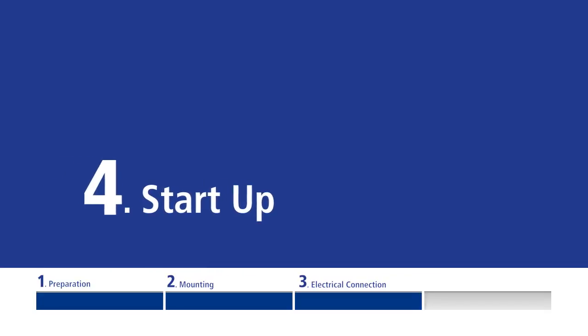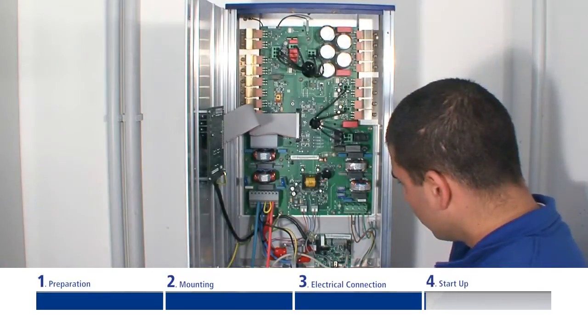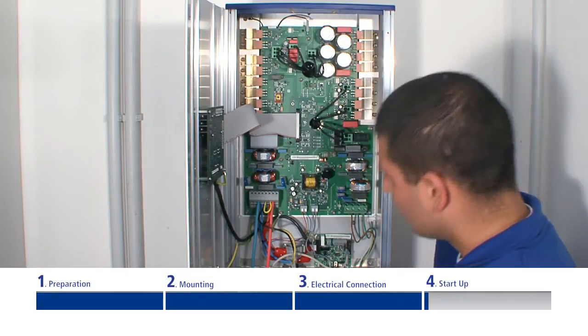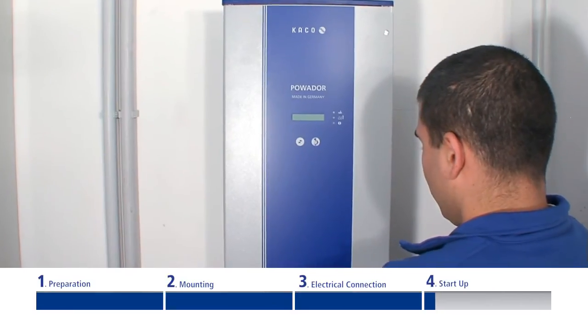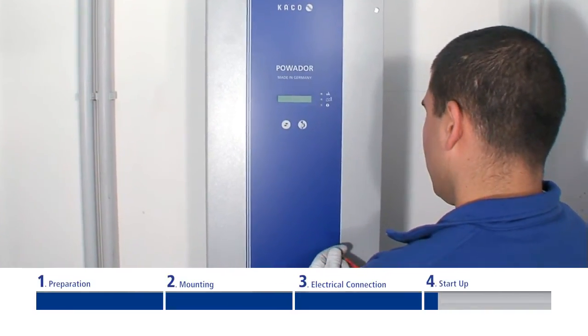Start up. Now the inverter is mechanically and electrically installed. The inverter can only be put into operation under daylight conditions when the solar generator is energized.